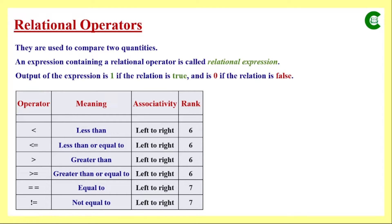Rank means precedence. If an expression has more than one relational operator, which one will be processed first is decided by the rank — lower rank value means higher precedence. In this complete list, the first four operators have higher precedence and the last two have lower precedence. If an expression has more than one operator with the same rank, then associativity decides which one is processed first.